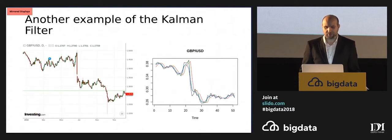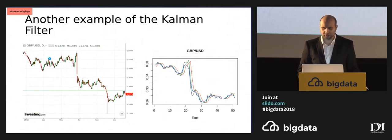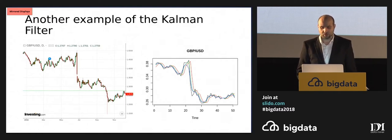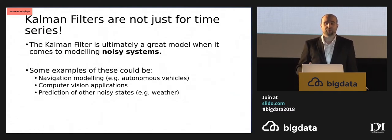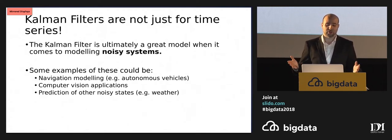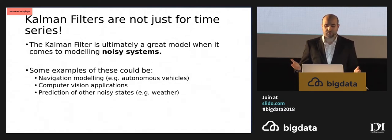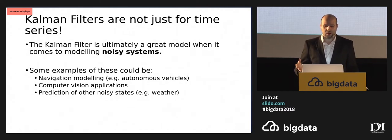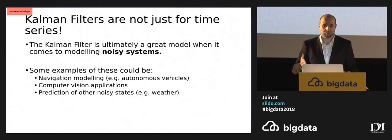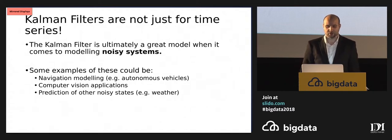Another example of the Kalman filter: when the pound plunged against the dollar as a result of Brexit, the Kalman filter can also be used to model an incident like that. The Kalman filter is not just used for time series — it's of great value when it comes to modelling noisy systems in general, such as autonomous vehicles, computer vision applications, or any data where we have noisy systems or systems that are very volatile and change based on a sudden break in trend.